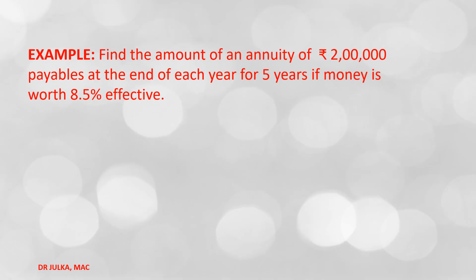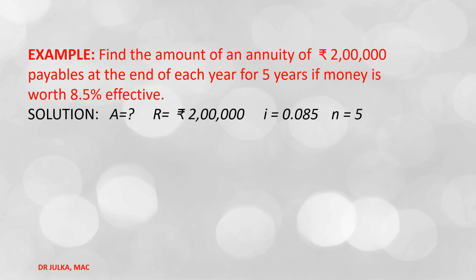First example: find the amount of an annuity of Rs. 2 lakh, payable at the end of each year for 5 years if the money is worth 8.5% effective. In this example, annuity amount R = Rs. 2 lakh, interest rate i = 0.085, and the number of years n = 5.